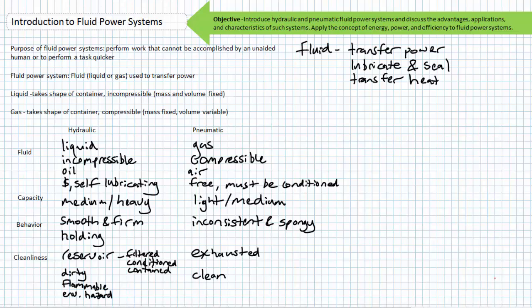Hydraulic systems have a deserved reputation of being dirty, greasy, oily, nasty systems. Pneumatics, in contrast, are considerably cleaner. A spill in a hydraulic system is an environmental contamination hazard, whereas a leak in a pneumatic system isn't necessarily environmentally hazardous. As if this wasn't enough, there are flammability concerns with hydraulic oil, especially around electricity and high temperatures.